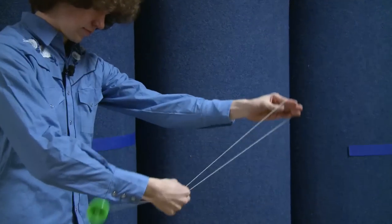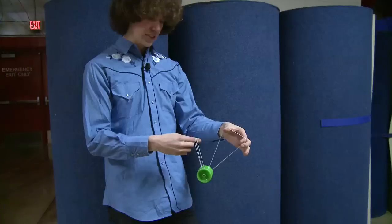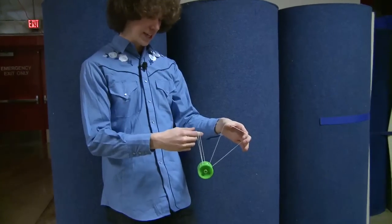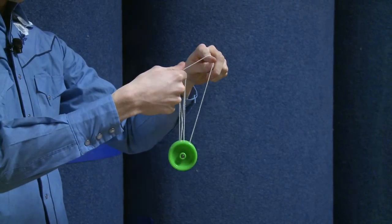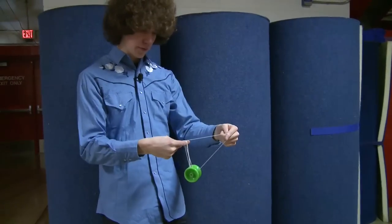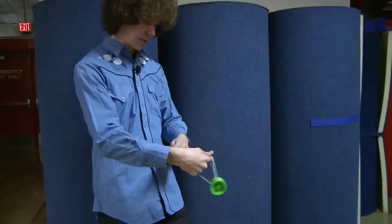After you've mounted the yoyo on both strings, you take your throw hand pointer finger, and you insert it into the string loop created by your free hand. Once your pointer finger is in the loop, you'll notice that the formation is similar to a split bottom out, and it can function the same, and you can do tricks like barrel rolls.